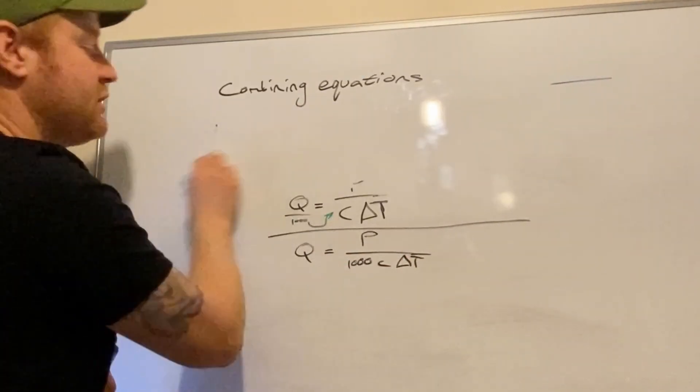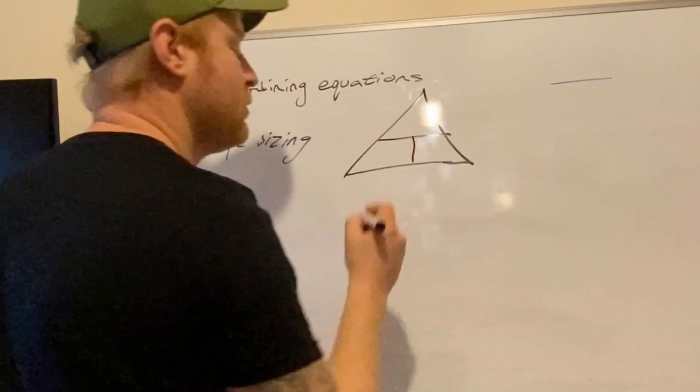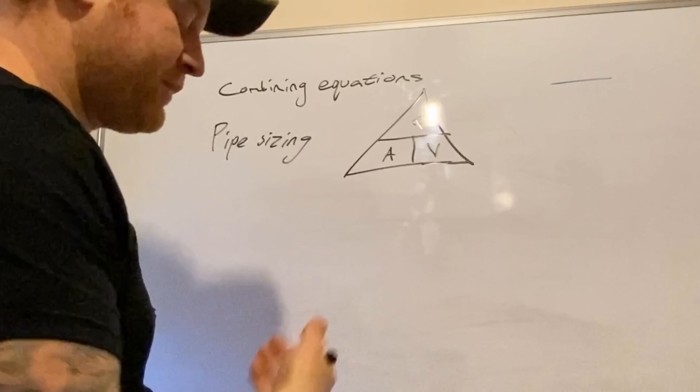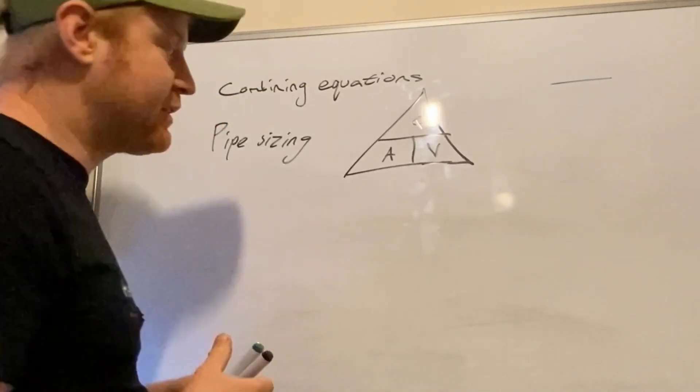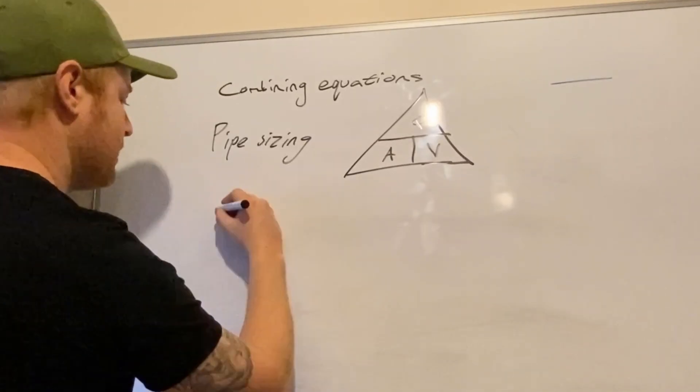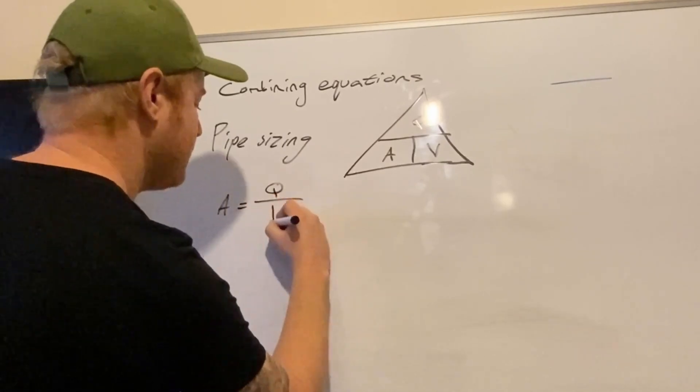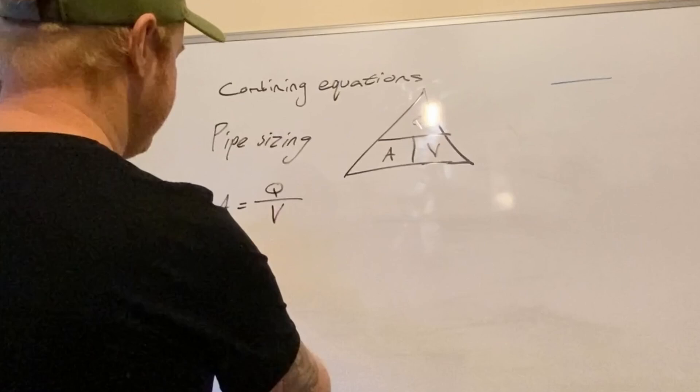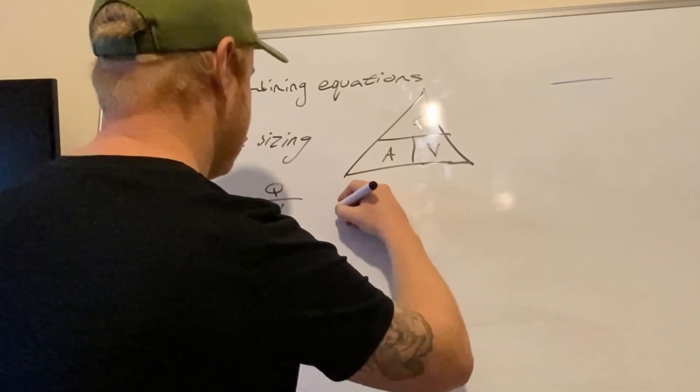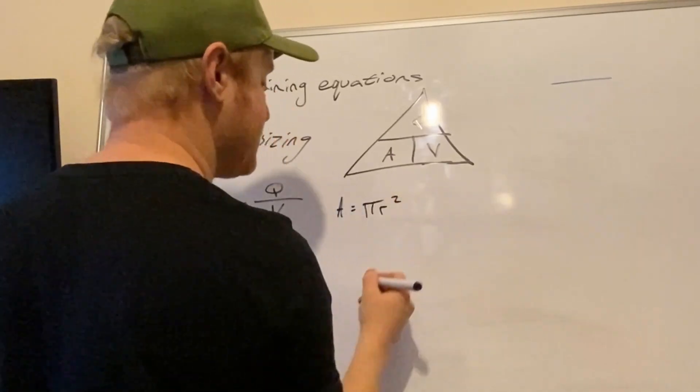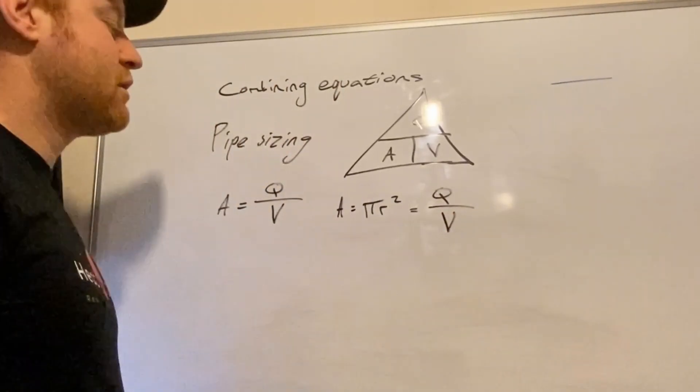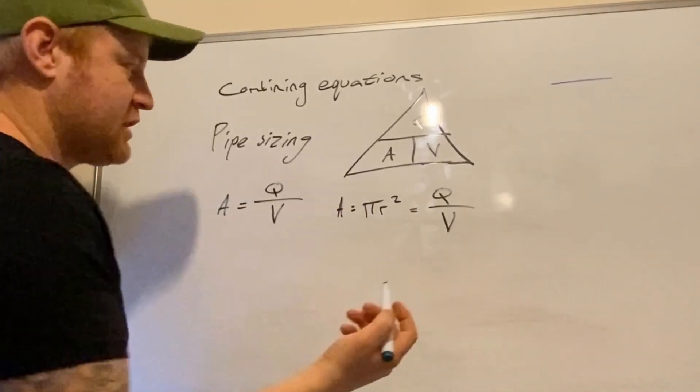The next one we do is pipe sizing. So we're all familiar with this triangle, which is the velocity triangle. Flow on the top, velocity on the bottom, area the result when we're working out the area. Area is not very useful for us. So if we break down the area... First of all, to write this longhand, area equals q over v velocity. But we don't really want area because area is pretty useless. So what is area? Area is π R squared and that is flow over velocity. But also, that's pretty useless for us as well, right? So we want to separate this out.